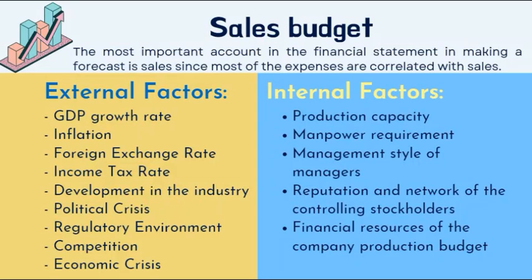We have here the internal and external factors. Pag sinabing external, these are the factors that happen outside the business. Pag sinabing namang internal, these are the things or events na nangyayari sa loob ng business. Unahin na po natin dyan yung internal factors. Una dyan is about the production capacity — this is the maximum potential of a business to produce finished goods with available budget, raw materials, or given tools. Syempre kakailangan mo na mga raw materials, mga tao, mga machines, at lokasyon para po i-produce ang yung products.